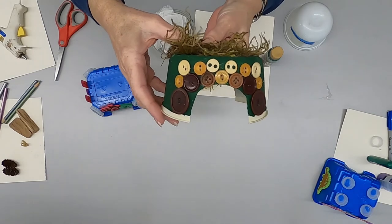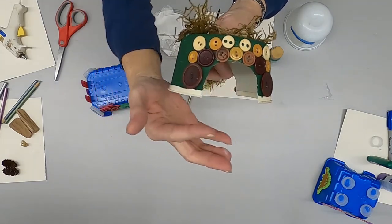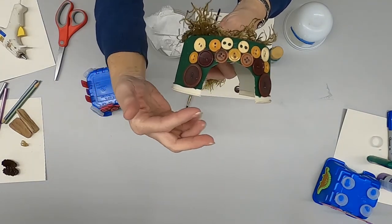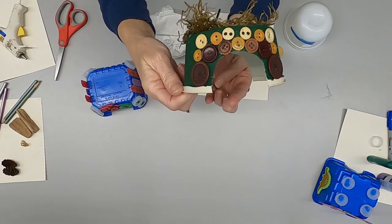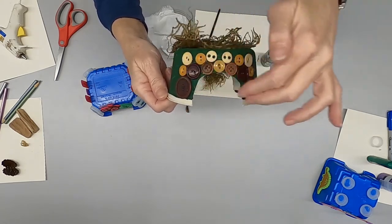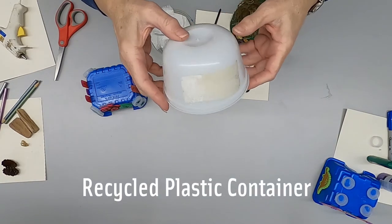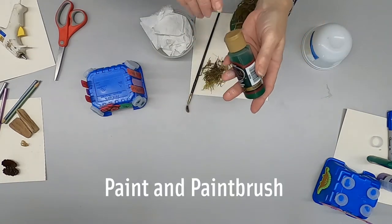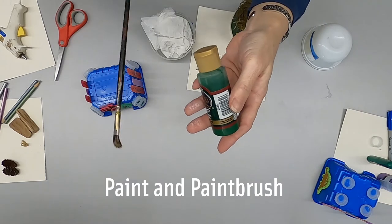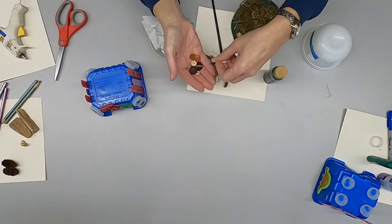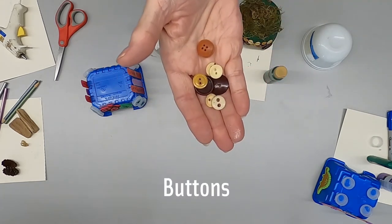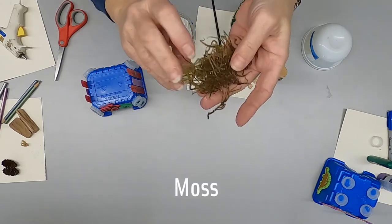This third example uses a combination of natural materials and materials from our recycle box. This is what we used. A round container. Some acrylic paint. We added some buttons. And also some moss.